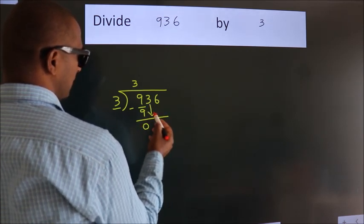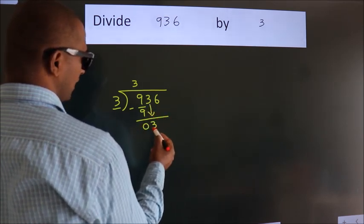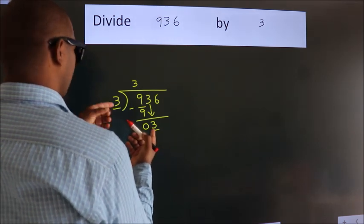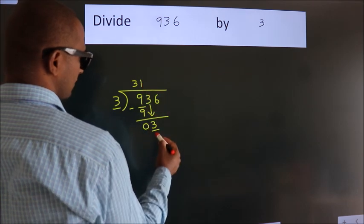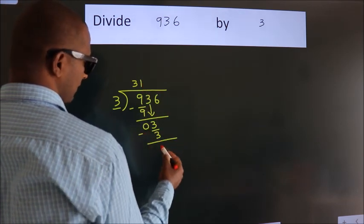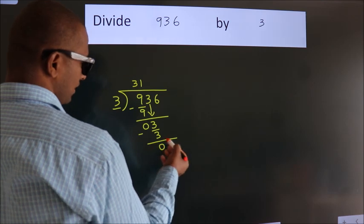After this, bring down the beside number. So 3 down. When do we get 3? In the 3 table, 3 once is 3. Now we subtract. We get 0.